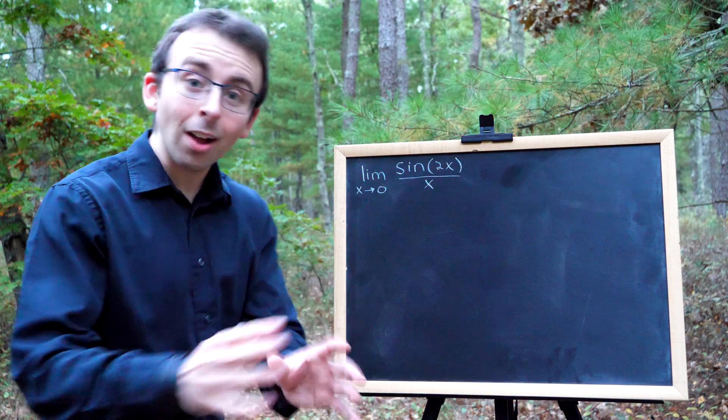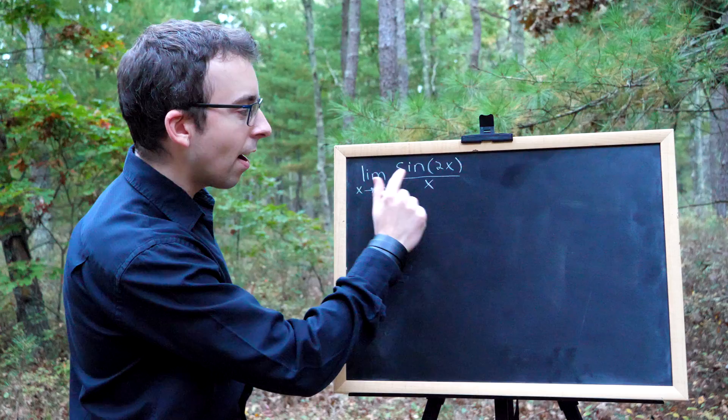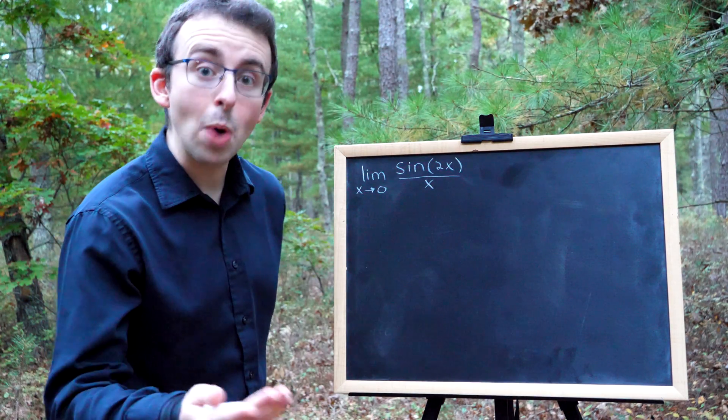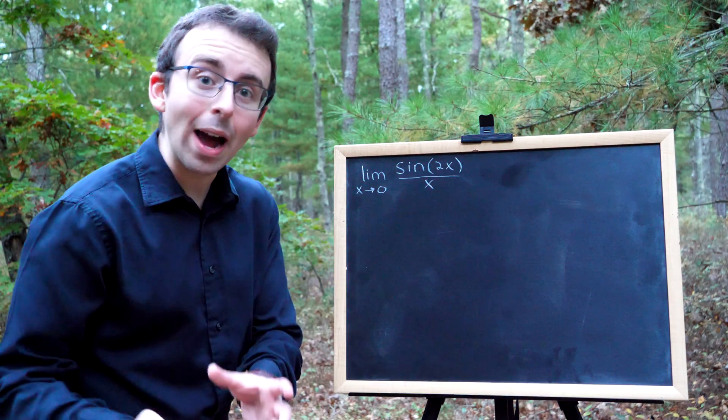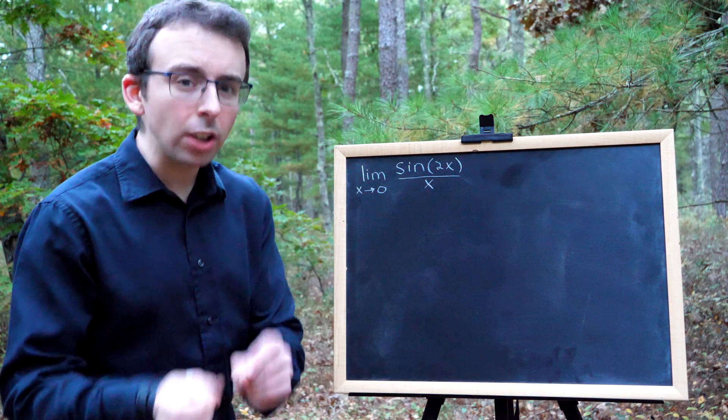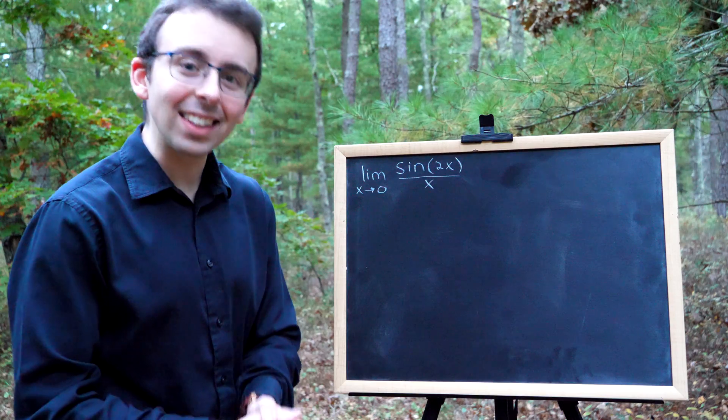But not all is lost, because what we have here is sine of a thing, 2x, over x. x is not 2x, but it's pretty close, and x is approaching 0 in this limit.